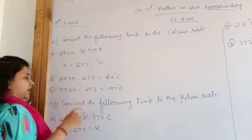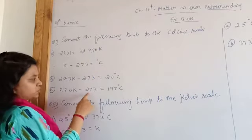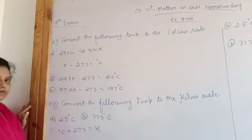Now, second: 470 Kelvin minus 273 Kelvin equals 197°C.